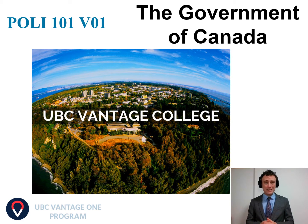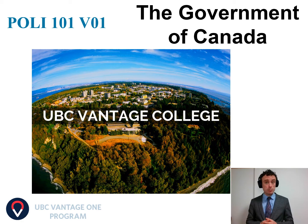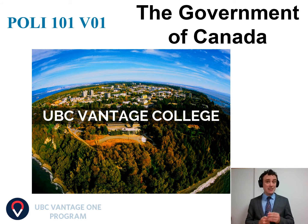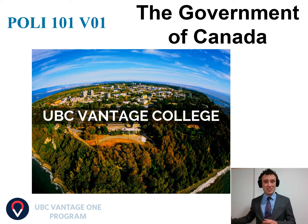Hello students, and welcome back to POLY 101, the Government of Canada. Last week, we studied federalism and regionalism in Canadian politics. This week, we continue our exploration of the machinery of Canadian government by beginning a two-week exploration of the Canadian Parliament. Today we are going to focus on the executive branch, the central agencies, and the federal bureaucracy. Let's get started.